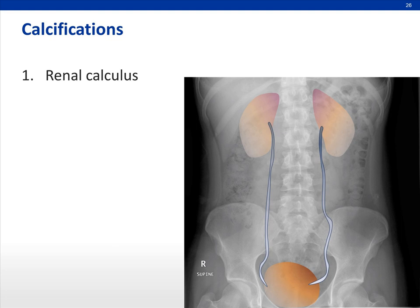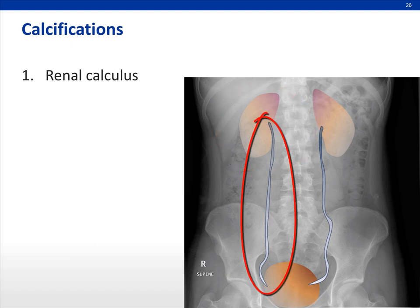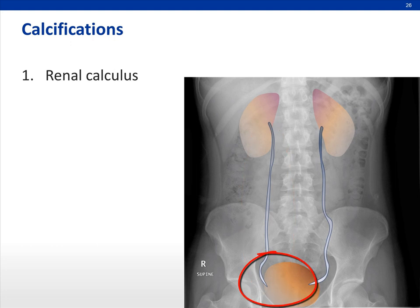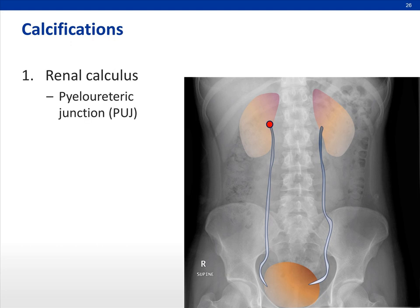For renal calculus, it's important to note that they can occur anywhere along the urinary tract. You must inspect the kidneys, the ureters — which course along the lateral margins of the transverse processes — and all the way down to the bladder. There are three anatomical narrowings that may cause a calculus to become stuck: the pelvi-ureteric junction, the pelvic brim where the ureter crosses over the bifurcation of the common iliac vessels, and the vesico-ureteric junction.